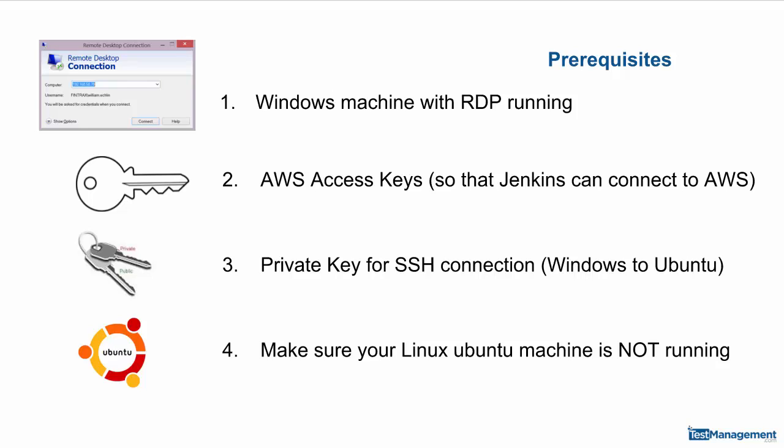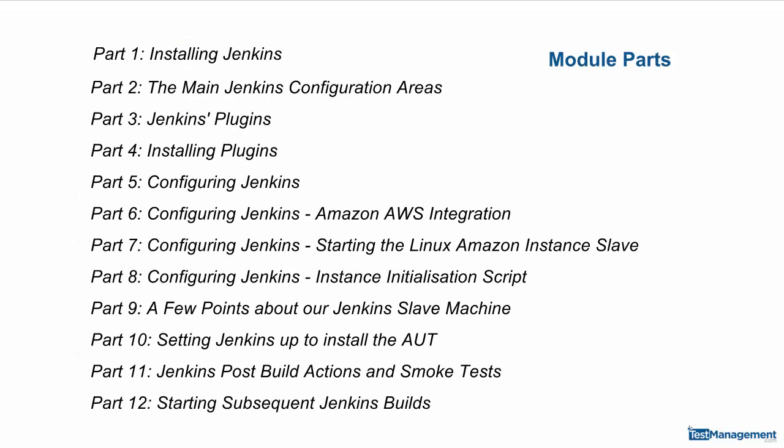So with all of that in place, we'll be in a position to start building and installing Jenkins. We're going to take you right through from installing Jenkins on your Windows instance in the Amazon Cloud, right through to kicking off builds or tasks using Jenkins and triggering those builds automatically.